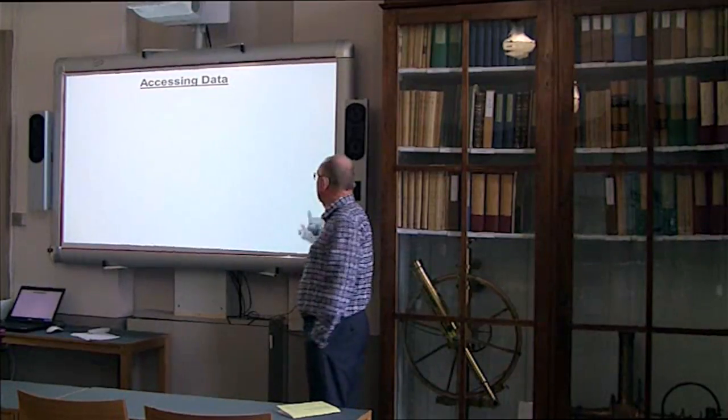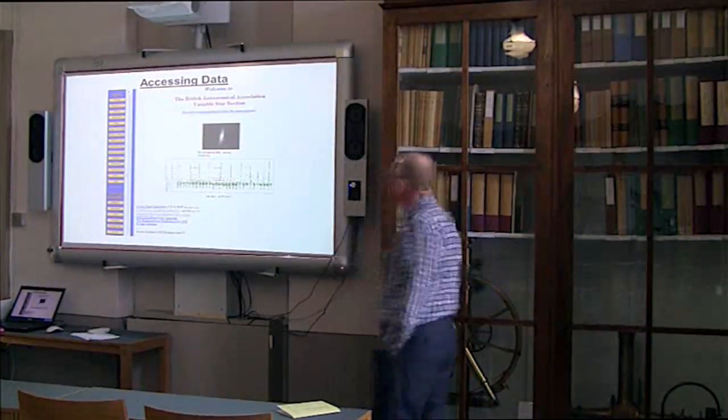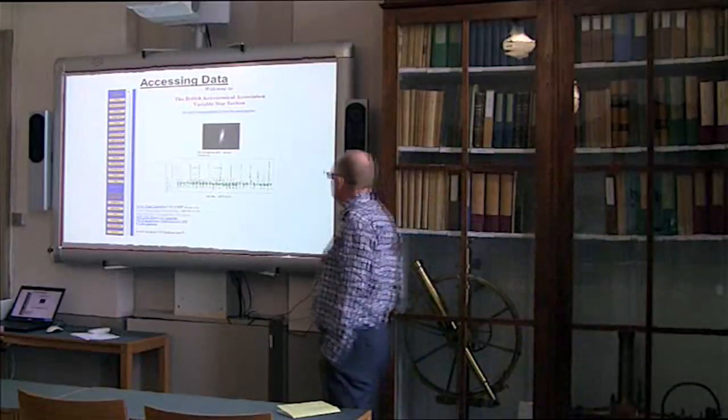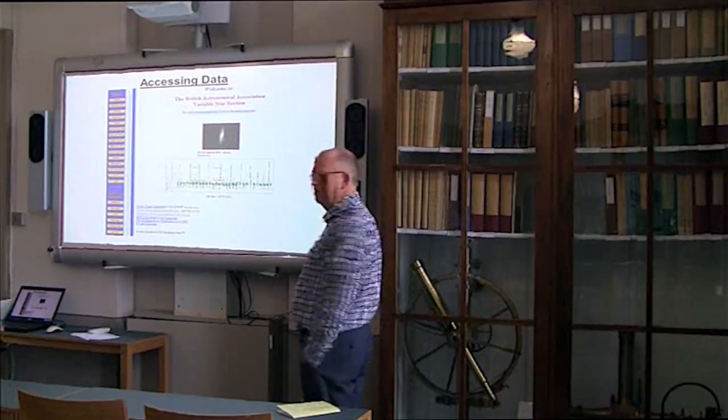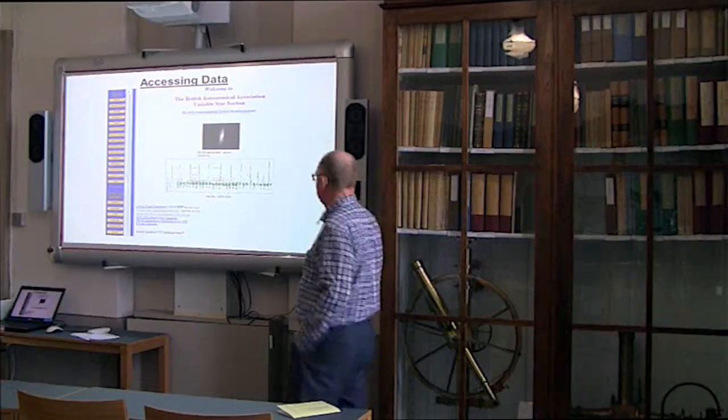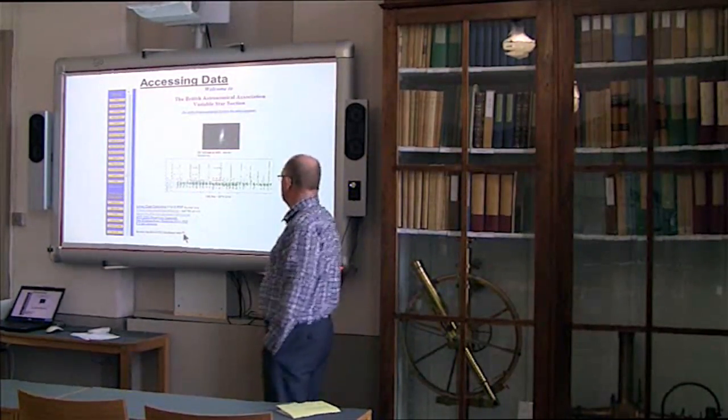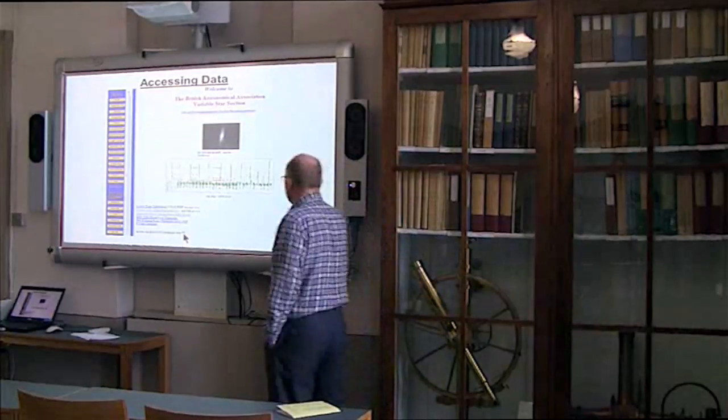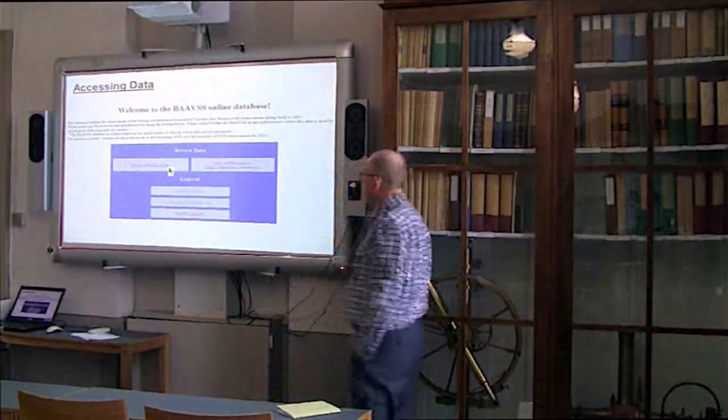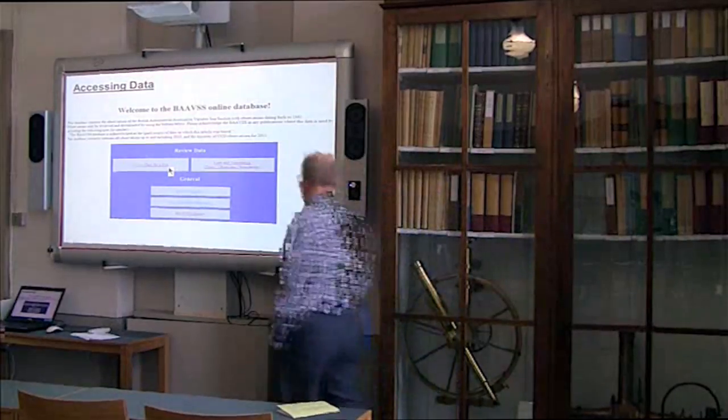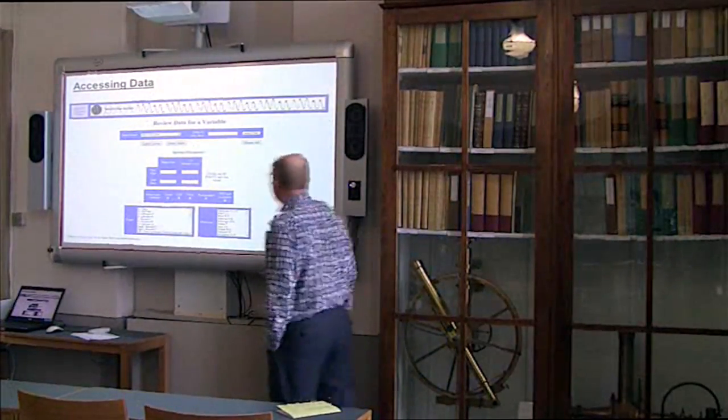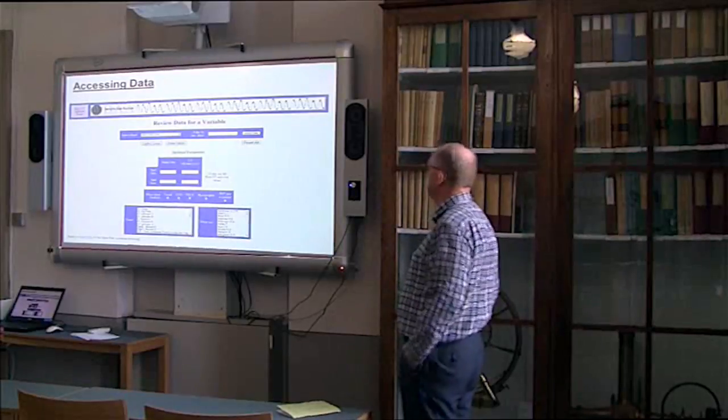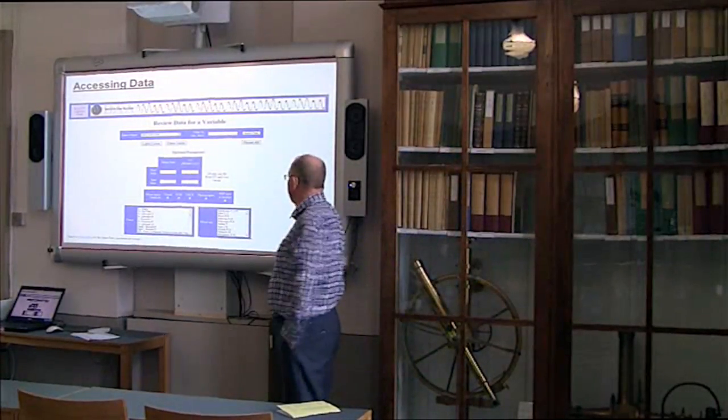Accessing data. That is our website, and this is how you can access light curves and other data and sections of light curves. Access the BAA VSS database there. Review data for a star. Then submit the object you wish to see and the parameters.